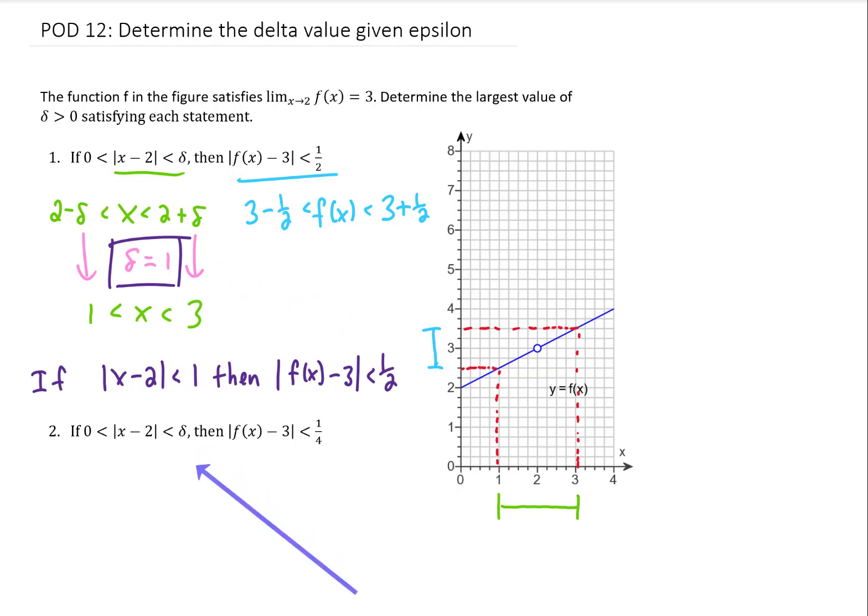Let's do the same problem, except this time right here we have a value of 1 fourth instead of 1 half. I'm going to erase this stuff on this graph and let's do this problem again. What this line here says is that we want our y values to be within a distance of 1 fourth from the value of 3. So that would be right here on this graph.